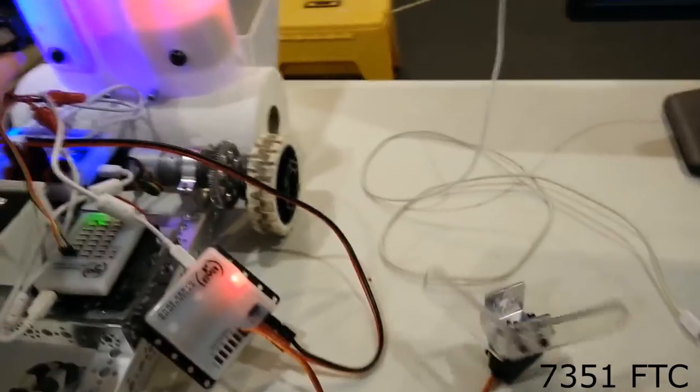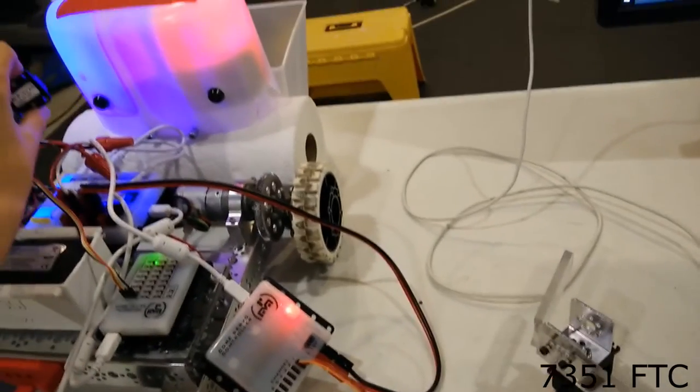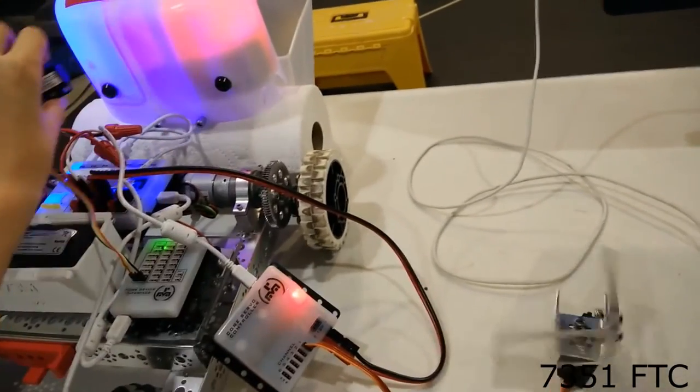Here's FTC team 7351 demonstrating the use of their Modern Robotics color sensor on the FTC rescue beacon. If it's blue it will turn red, blue, red, blue.